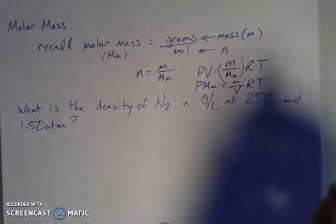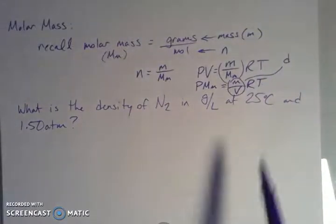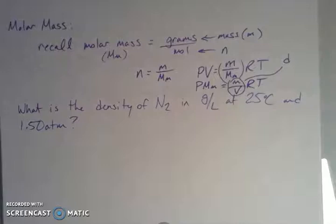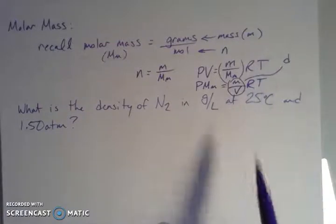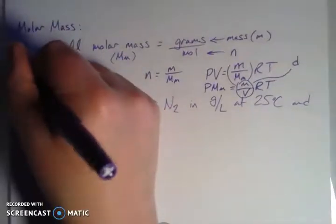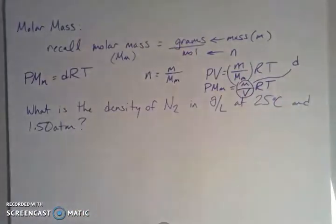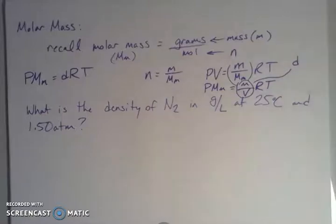Mass per volume is density, D — grams per liter. So this becomes a different form of PV = nRT that I call 'Pimdert', as opposed to 'Pivnert'. Pivnert is PV = nRT; Pimdert deals directly with density. They're the same equation, but we use this form when we're given or looking for different values — specifically density.